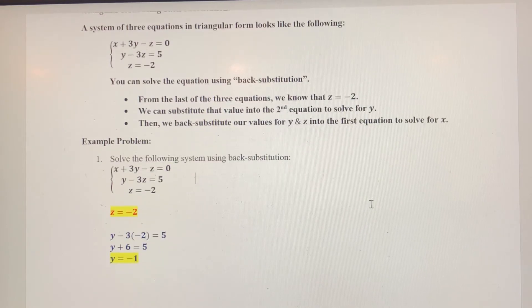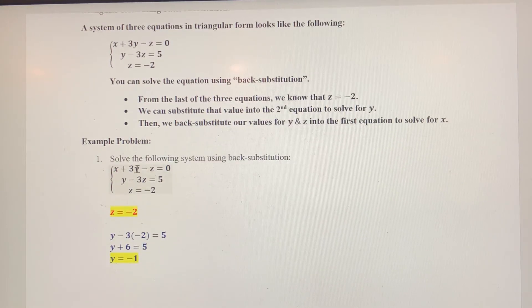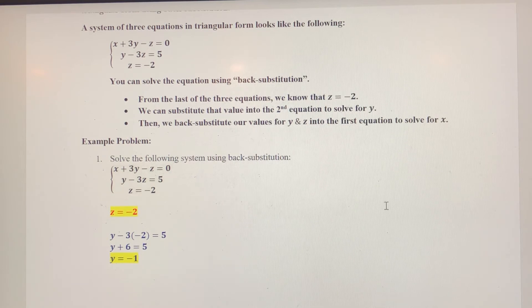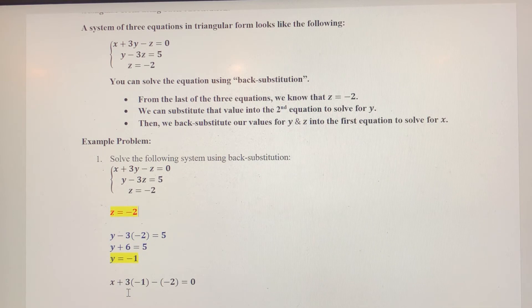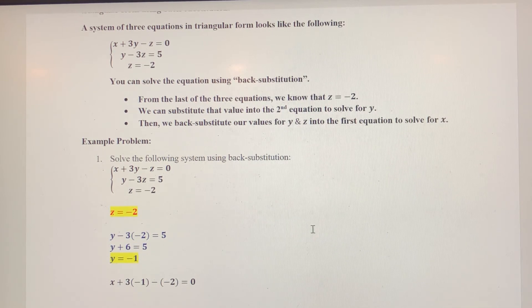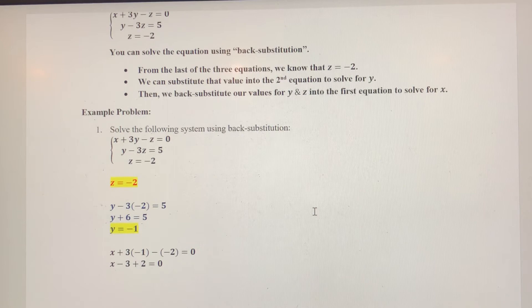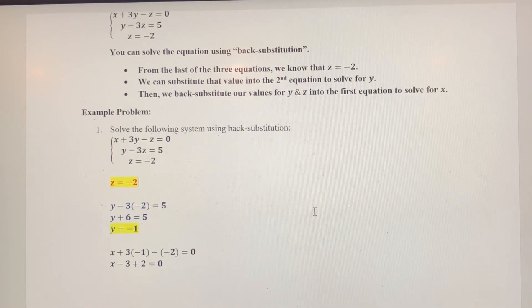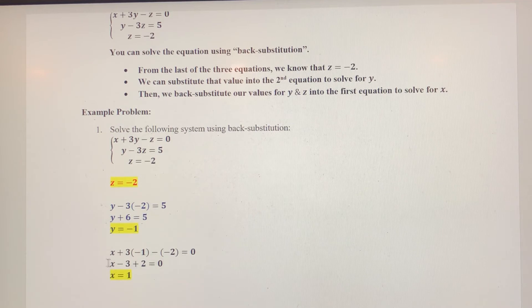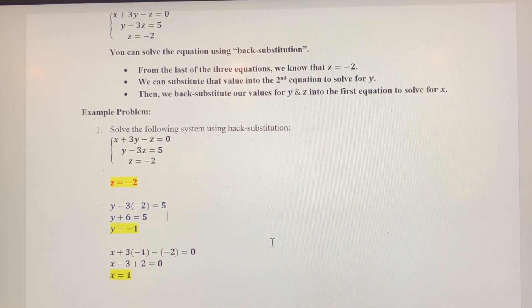Now I've got two-thirds of my solution, and then finally, I'm going to plug Y. I'm going to replace Y with negative one. I'm going to replace Z with negative two. So, I've got X plus three times negative one minus a negative two equals zero. Do a little bit of math. X minus three plus two equals zero, and that gives me that X equals a positive one. I get X minus one equals zero, so X equals positive one.